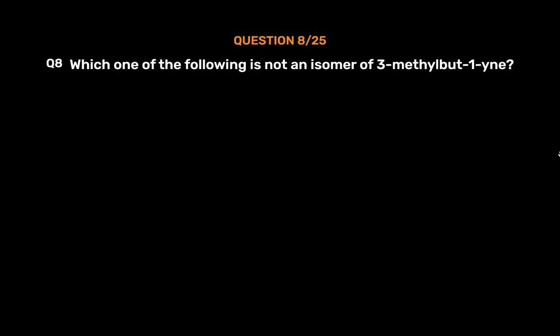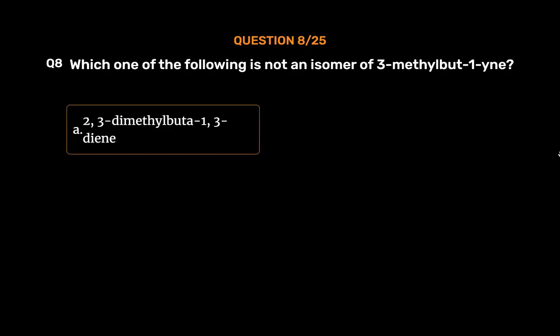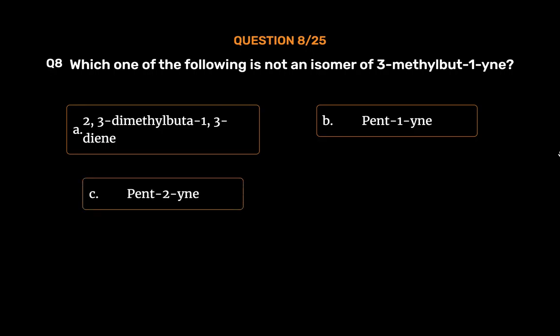Question number 8. Which one of the following is not an isomer of 3-methyl-but-1-ene? Option A, 2,3-dimethylbuta-1,3-diene; Option B, pent-1-ene; Option C, pent-2-ene; Option D, penta-1,3-diene. The correct answer is Option A, 2,3-dimethylbuta-1,3-diene.